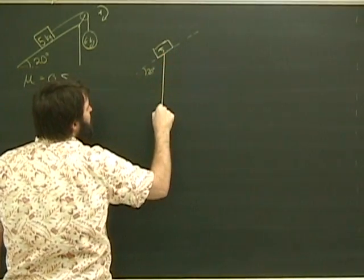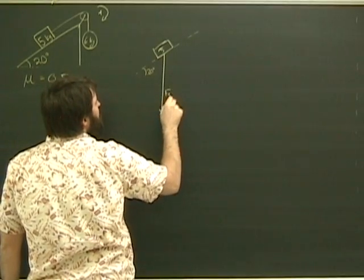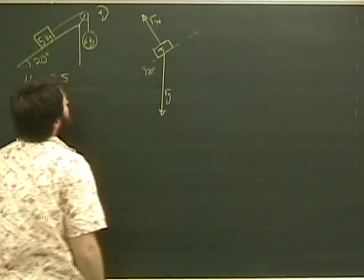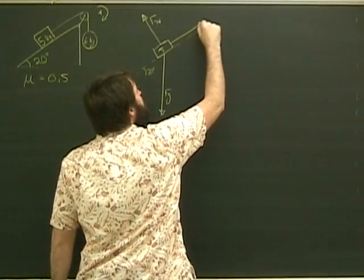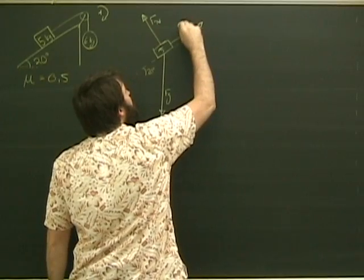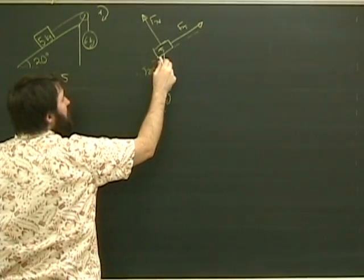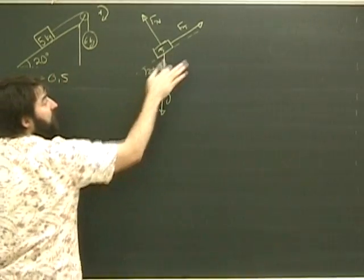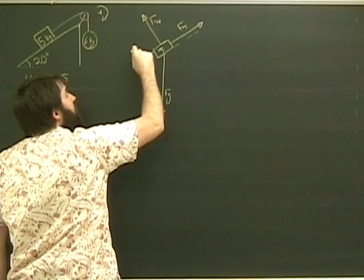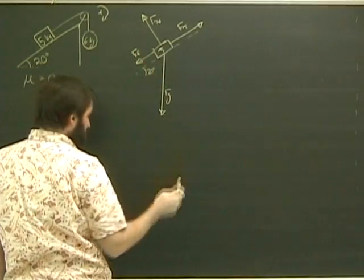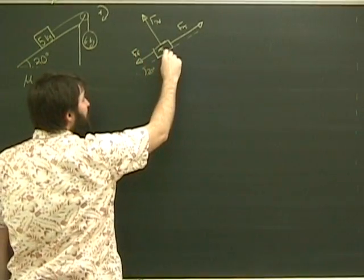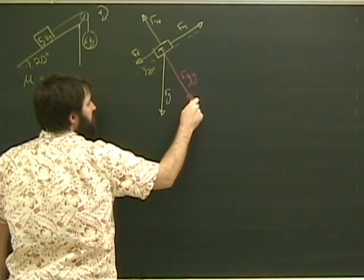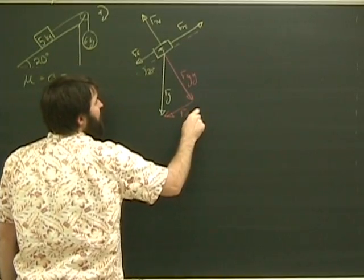Obviously there's gravity, Fg. There's a normal force. Now there's a tension going up the ramp, we'll call that Ft. There is friction. Assuming we're correct that this mass is going to go up the ramp, friction would have to be pointing down the ramp, force of friction. Obviously you have to break Fg into its two components, Fgy and Fgx.